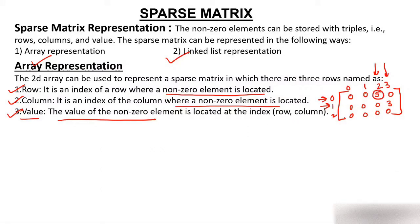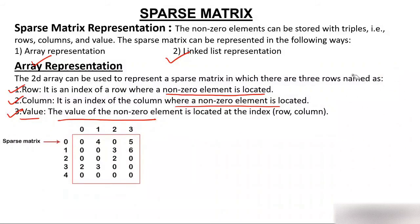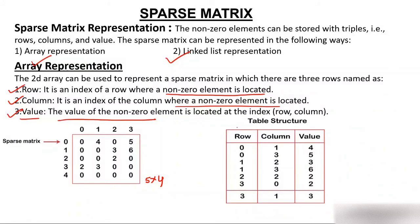Looking at the diagram, it shows a sparse matrix because the maximum elements are zero. This is a five cross four matrix with five rows and four columns. To store only non-zero elements, we make a table with three parts: row, column, and value. For example, at row zero, column one, the value is four. At row zero, column three, the value is five. Similarly, all other non-zero values are stored in this tabular representation.